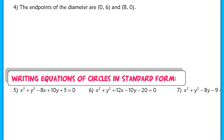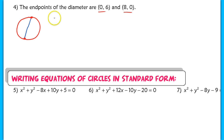In question 4, all they tell you is that the endpoints of the diameter are at (0, 6) and (8, 0). Basically you have two coordinates that lie on the circle representing the endpoints of a diameter. We're missing both the radius and the center. We can't use either of those points as the center.